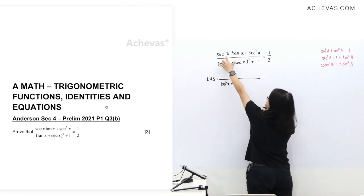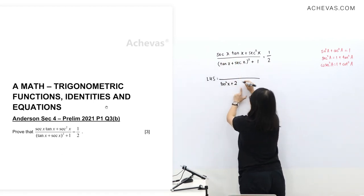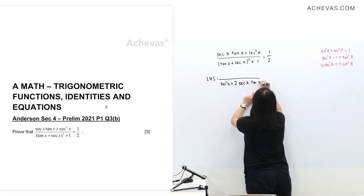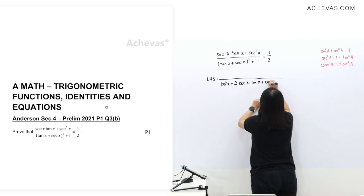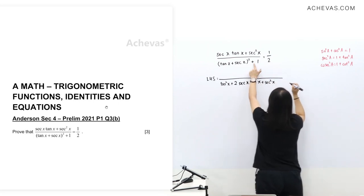Since I have this pattern, I'm going to write the center term following the pattern on top. So I have tangent square plus two sec x tangent x, and sec square x, and I have a plus one here.